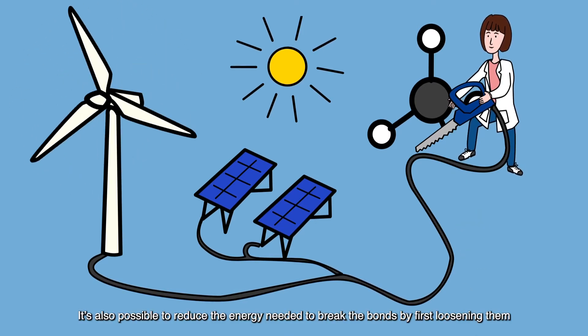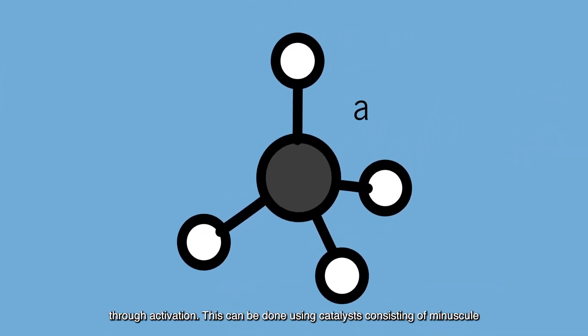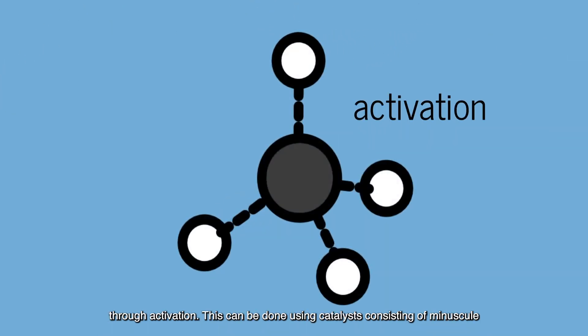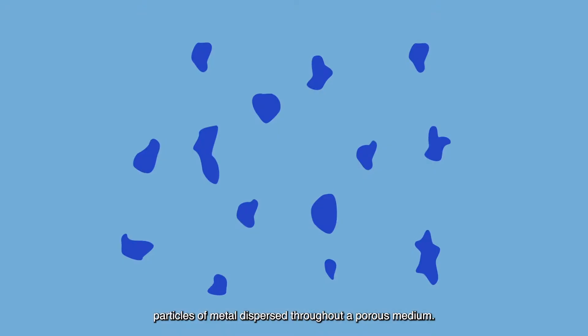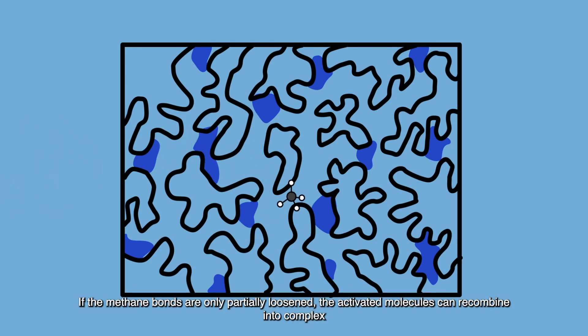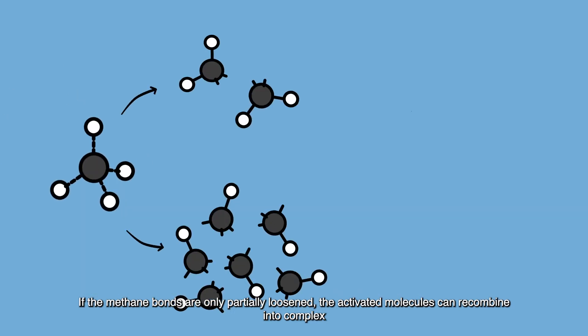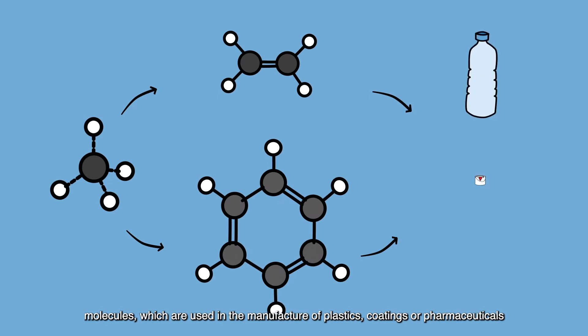It's also possible to reduce the energy needed to break the bonds by first loosening them through activation. This can be done using catalysts consisting of minuscule particles of metal dispersed throughout a porous medium. If the methane bonds are only partially loosened, the activated molecules can recombine into complex molecules, which are used in the manufacture of plastics, coatings, or pharmaceuticals.